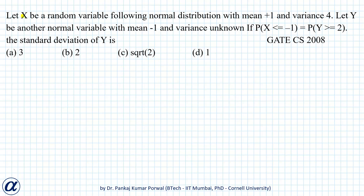In this question, x is a random variable with normal distribution with mean 1 and variance 4. The standard deviation equals the square root of variance, which is the square root of 4, equals 2. Y is also a normal random variable with mean minus 1 and variance unknown.